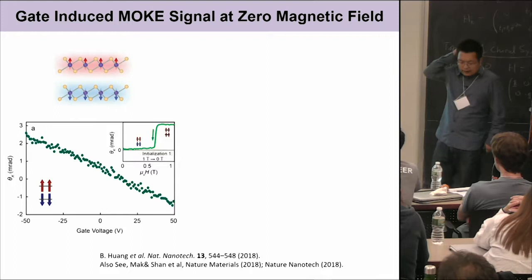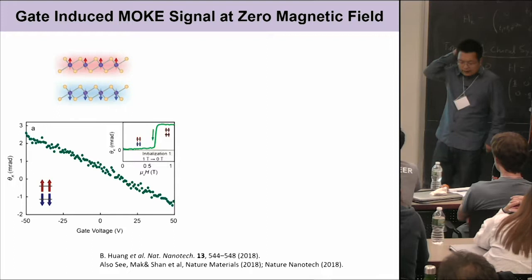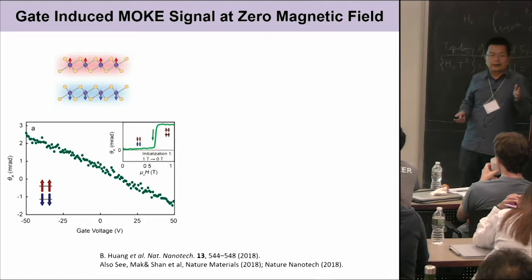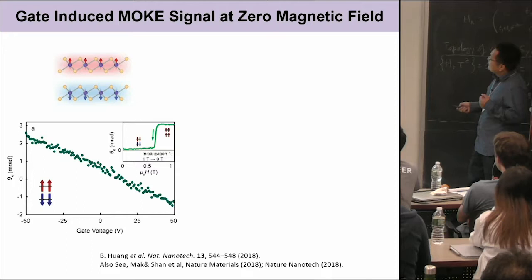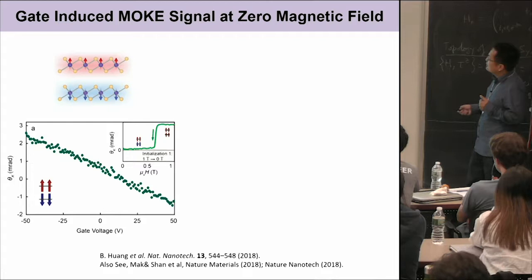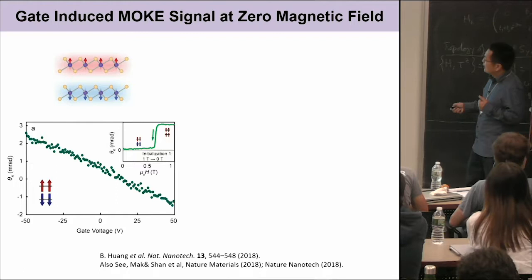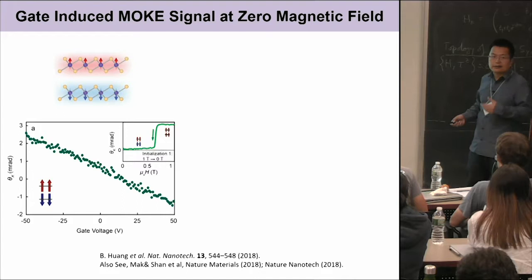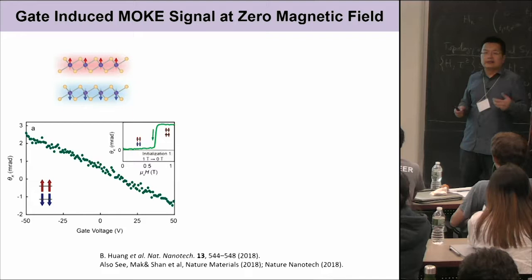Another neat example: for the antiferromagnetic state, the Kerr rotation signal should vanish because the magnetization is zero. However, if we apply a net electric field perpendicular to the sample, then we can measure the Kerr rotation signal. The Kerr rotation signal increases as we tune this gate voltage — a linear response — this is an electric field-induced magneto-optical Kerr effect.